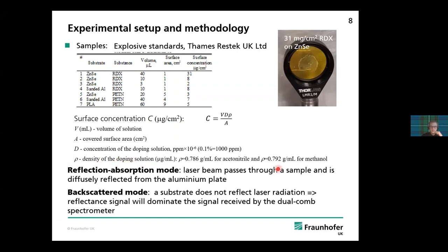Measurements were carried out in two modes. The first is reflection-absorption mode: the laser beam passes through the sample and is then diffusely reflected from a sanded aluminum plate positioned behind the sample. The reflected light is collected and detected by the spectrometer. In backscattered mode, the substrate — in our case black plastic — does not reflect much laser radiation, and the signal on the detector is determined by the laser emission affected by the target itself, in our case PETN.